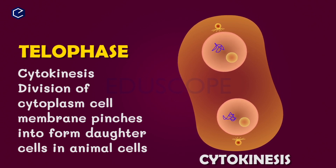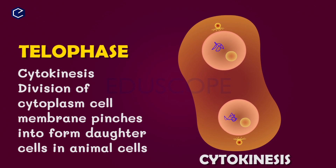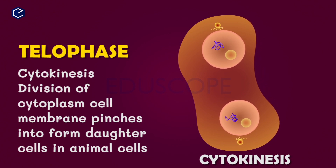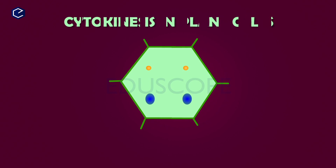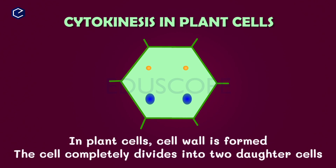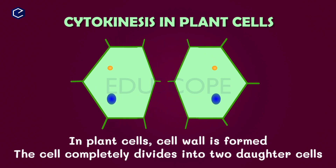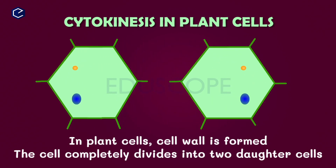After telophase, what happens is cell division. Two nuclei are now present and the cytoplasm divides. In animal cells, the cell membrane pinches inward and the cell divides. In plant cells, a cell wall forms between the two nuclei, completely dividing the cell. This completes the organism's mitosis and cell division process.